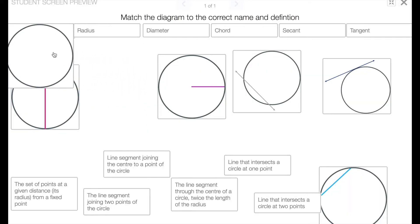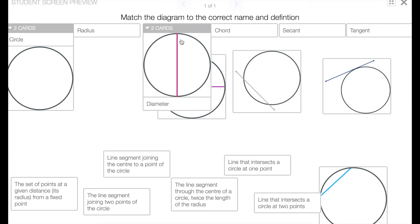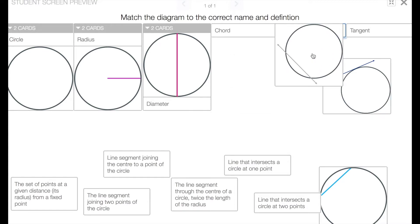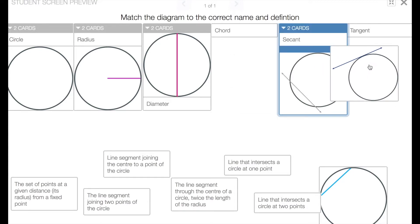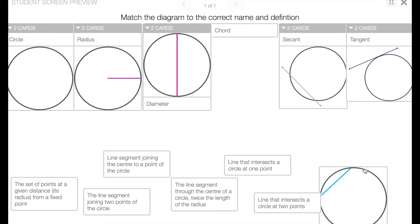For the first activity, students will work in pairs to match the diagrams with the correct name. These include the circle, radius, diameter, chord, secant and tangent. Following this, the students will then match the definitions to the correct label and diagram.